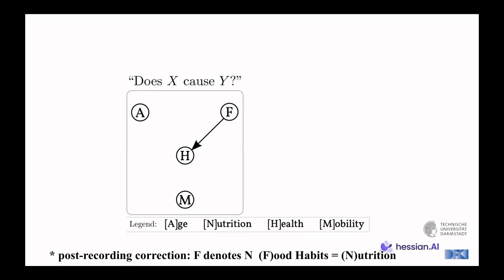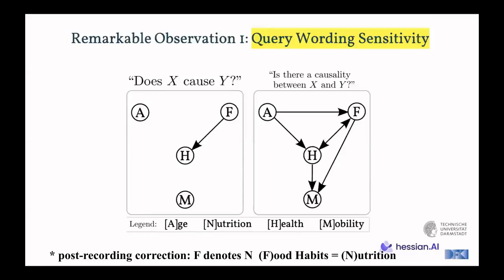See here, first simple setup with four variables, age, nutrition, health, and mobility. And we ask the question, does X cause Y? For example, does age cause health? Does age have a causal relation to health, essentially? And as you can see, there is actually the graph is very sparse. There's only one relation being given by the LLM, which is between nutrition and health. But now if we ask a different type of question, if we ask, is there a causality between X and Y? Suddenly, we see that we have a high sensitivity to query wording as there's a lot more graph edges now being denoted for the graph structure. So for example, we can find now that there's a relation between age and nutrition, and age and health, and actually that they are asymmetric, right? So age is only causing health and not the other way around, much more as we would possibly anticipate in such a simple example.